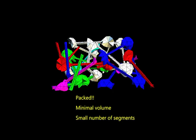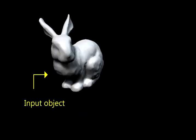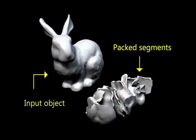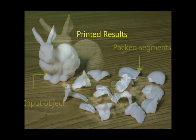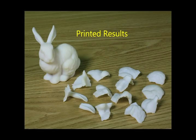The output of the framework is a set of segments and their position and orientation on the printing tray. The user then prints the object and glues the pieces to reconstruct the original object.